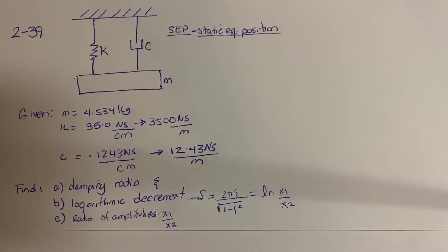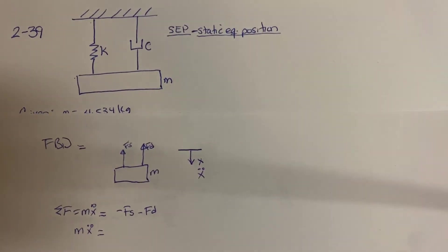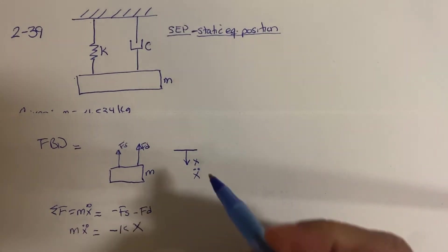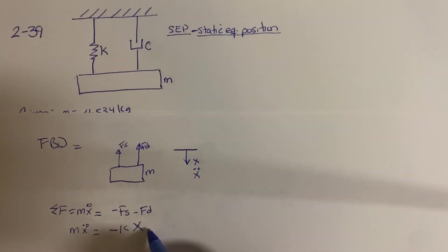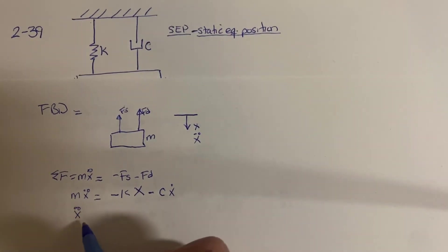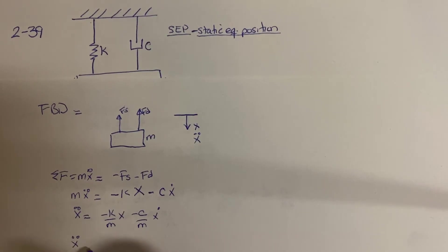Let's define the equation of motion, which we know is sum of forces equal to mass times acceleration, and it's going to be equal to minus Fs minus Fd. We can find that the spring force is equal to minus kx, where x represents the distance the spring moves downward or stretches, and the damping force is represented by the damping coefficient times velocity. Rearranging this equation, we can define the equation of motion, which gives us: x-double-dot plus (k/m)x plus (c/m)x-dot equals zero.